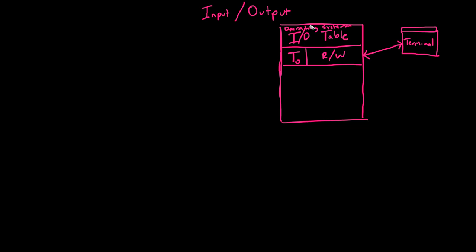How is it that when we run a program, we are able to send and receive input from and to a terminal? Each process that we run — let's imagine we run a process like cat — has the ability to read and write files. We're going to run cat in a special way: with an argument of a dash. What this dash means is there is no file for you to read; read your input from the standard input.